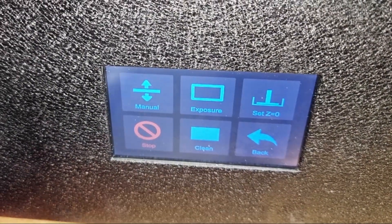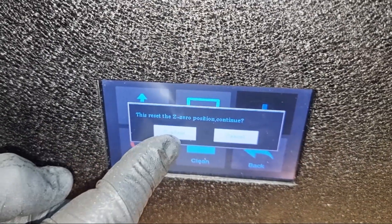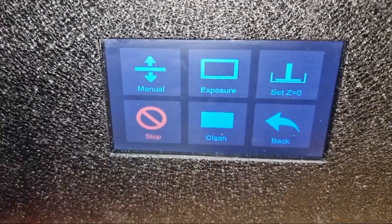To wrap up, we set Z equals zero. And we click on return. And now, your build platform is calibrated and your printer is ready to go. If you have any issues with your printer, please feel free to send a ticket to support at imaker.com. And thank you very much for watching this video.